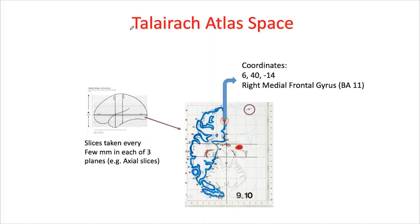The Talairach atlas is an older atlas. There is a newer atlas called the MNI — the Montreal Neurological Institute — atlas, which is more commonly used now. I will show you a few differences between MNI and Talairach; technically they are similar, but there are minor variations due to some technical issues.